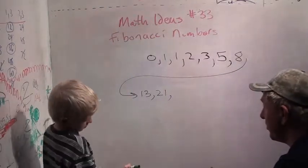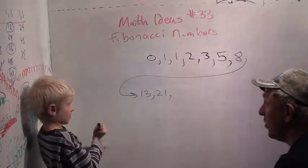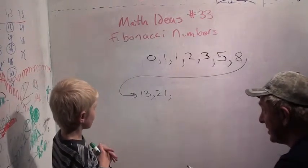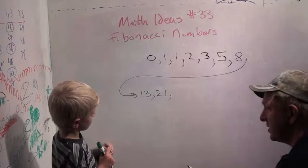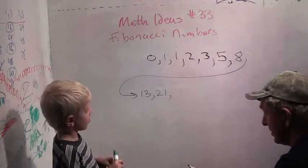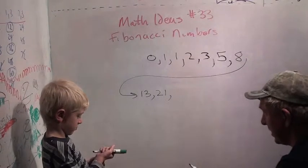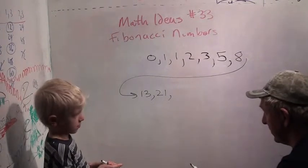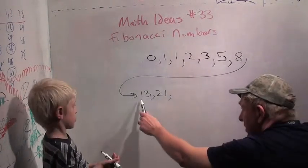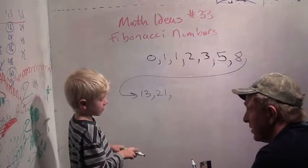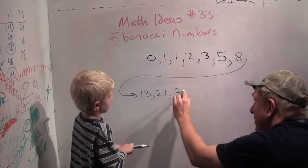All right, let's do one more. Thirteen plus twenty-one. How do you do thirteen plus twenty-one? We go ten plus three and twenty plus one. Okay, ten plus three and twenty plus one. I see what you're doing. Okay, so you have to add ten plus twenty. Ten plus twenty is? It's thirty. Three plus one is? Four. So it's? Thirty-four. Thirty-four. Very good.